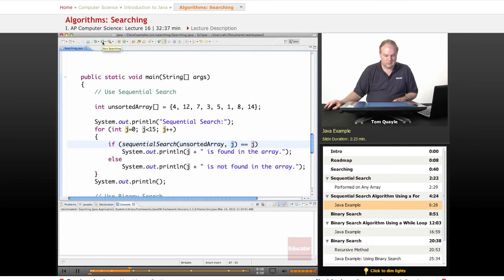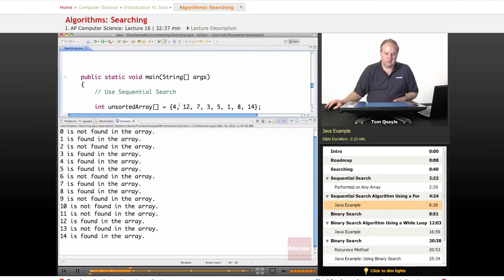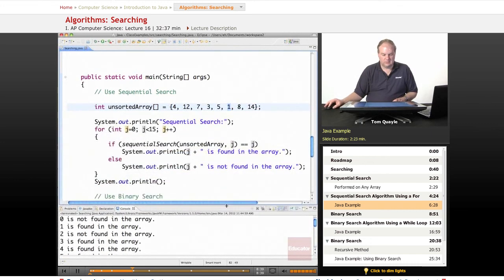Let's run this. And I'll expand this. And here we can see the values in the array and the results of doing this sequential search. It tells me that 0 is not found in the array. And that's true. 0 is not one of the elements in my unsorted array. 1 is found in the array. That was right here. 2 is not found. 3, 4, and 5 are found in the array. And so on. So it did work exactly as I wanted it to.